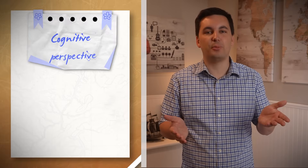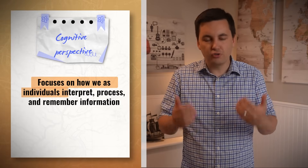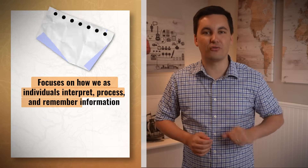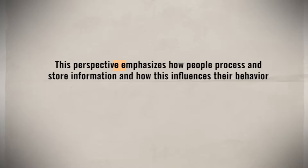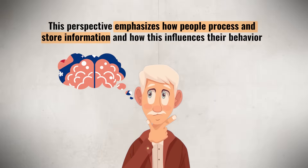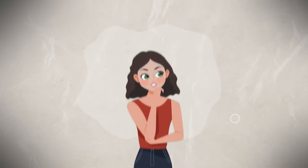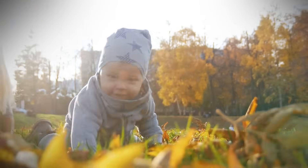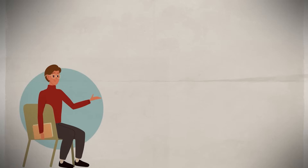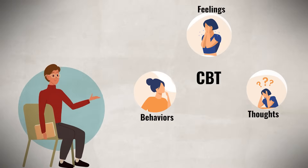On the other hand, the cognitive perspective focuses on how we as individuals interpret, process, and remember information. Essentially, this approach focuses on our inner thoughts. This perspective emphasizes how people process and store information and how that influences the person's behavior. But similar to the other perspectives, we are faced with the challenge of trying to study our thought processes in an objective and observable manner, which is essentially impossible. Many of our thoughts may be flawed and could be based on limited life experiences or our emotions. We can see this perspective is often used in cognitive behavioral therapy.